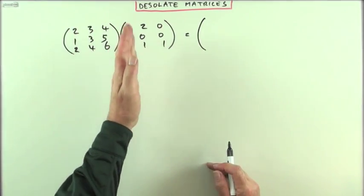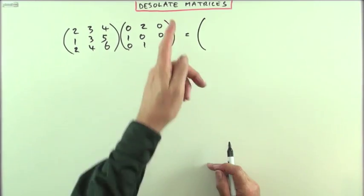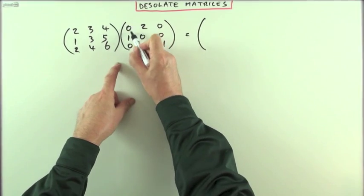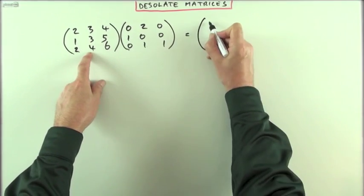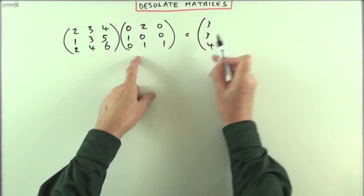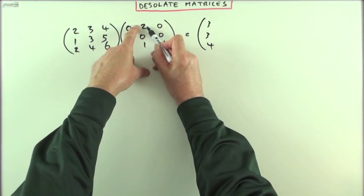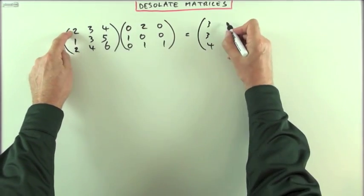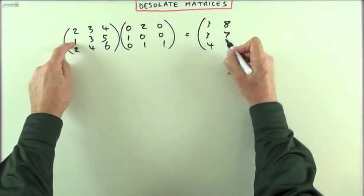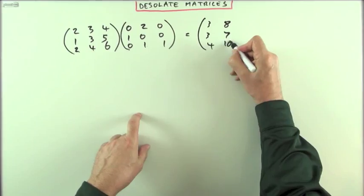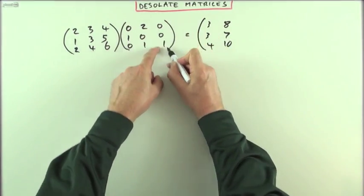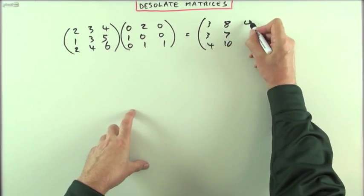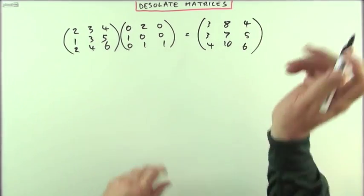Each column in the desolate matrix gives me the columns in the answer. The first column says: use the middle column - so that's 3, 3, 4. The middle column says: use 2 of the first and 1 of the last column - so 2 of this plus 1 of those gives 4+4=8, 2+5=7, 4+6=10. The last column says: use only the last column - that's 4, 5, 6. That's the multiplication done.